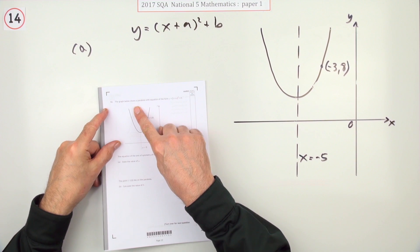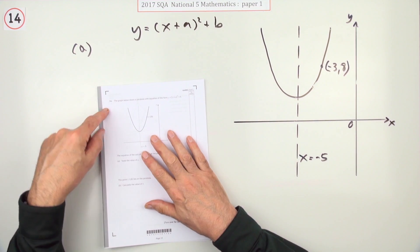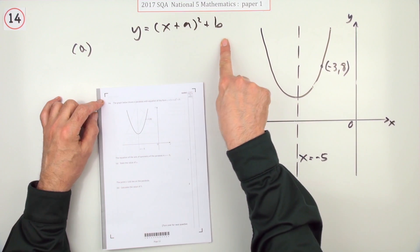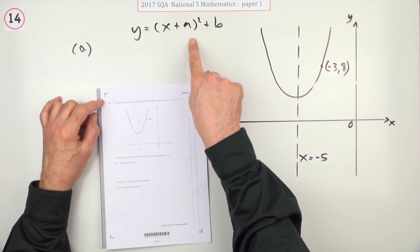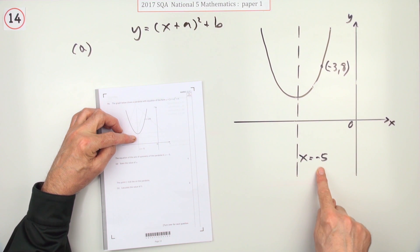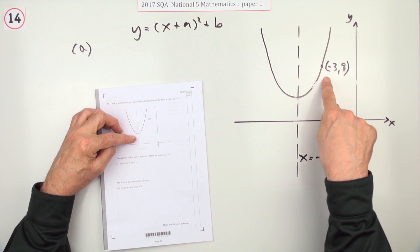Number 14 then from paper 1 of the 2017 National 5. You've got a parabola in the completed squared form, x plus a all squared plus b. You know the axis of symmetry is x is negative 5. It gives you a point on it.